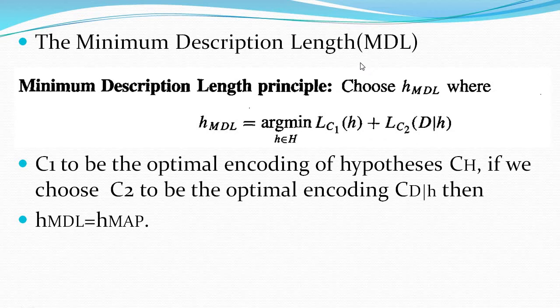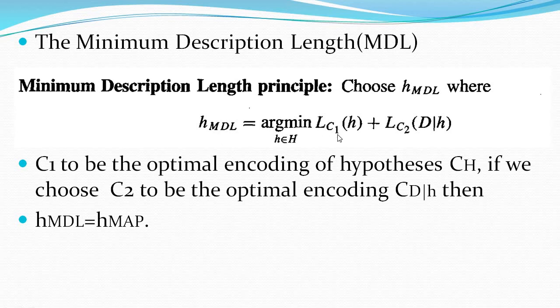The minimum description length formula is represented using the notation H_MDL. H_MDL is defined as: arg min h in H of LC1(H) plus LC2(D|H). Here L denotes length, C1 is the optimal encoding of hypothesis H, and C2 is the optimal encoding for D given H.